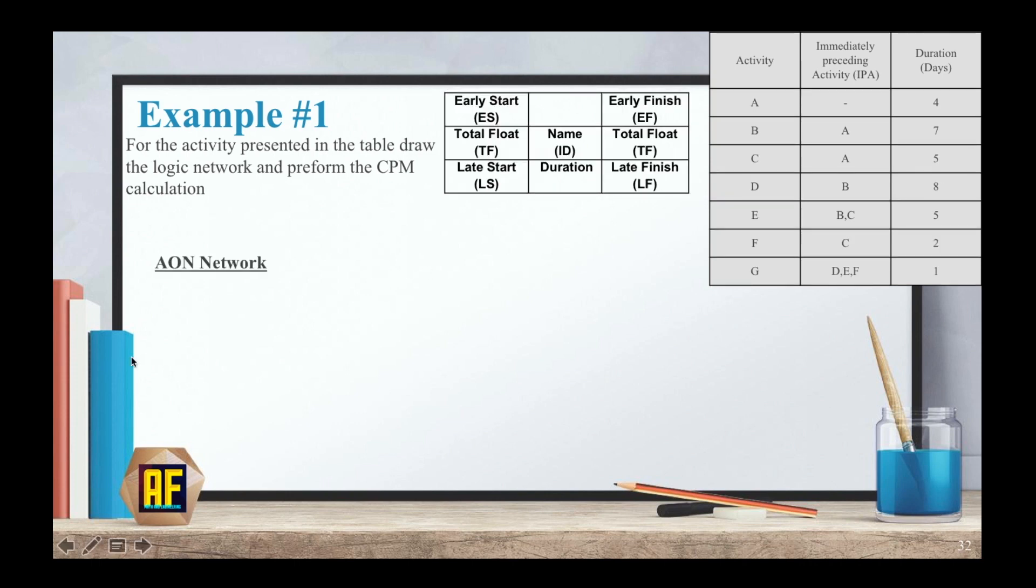So what is an AON network? An AON network is simply taking activity A and saying activity A goes to B and C. As we can see, activity A doesn't go anywhere, it's the first activity, and then activity A goes to B and C. We can continue with this network, but it's a waste of time. So let's go right ahead to the logic network, which is the main issue in this video.